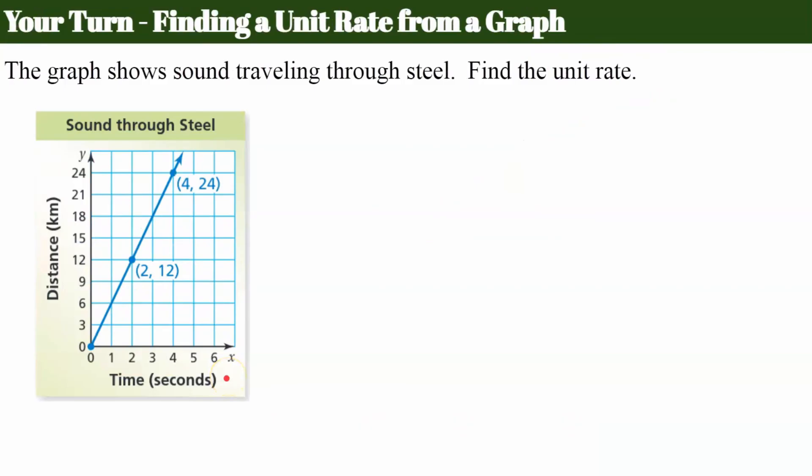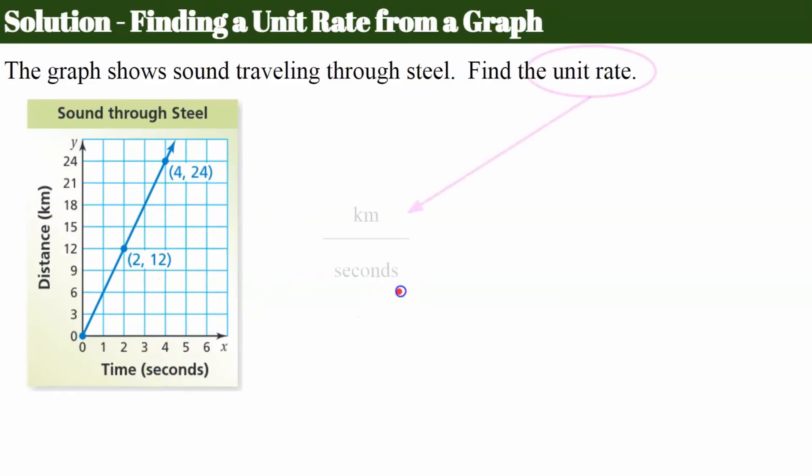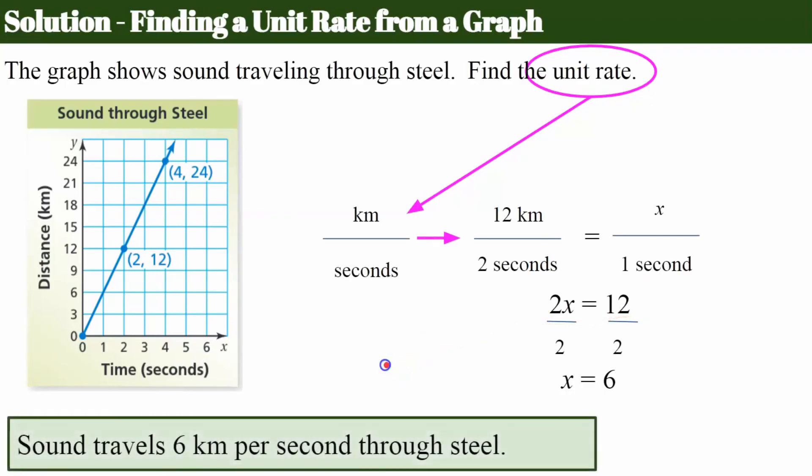Try this one. Pause, come back and hit play when you're ready. Welcome back. Let's talk about the sound through steel. We need to find the unit rate. We want to know kilometers per second. So we're going to set it up. Ordered pair given, 12 kilometers in two seconds equals X kilometers in one second. Cross products property, 2X equals 12. Divide both sides by 2 and X is equal to 6. So I can conclude that sound travels 6 kilometers per second through steel.